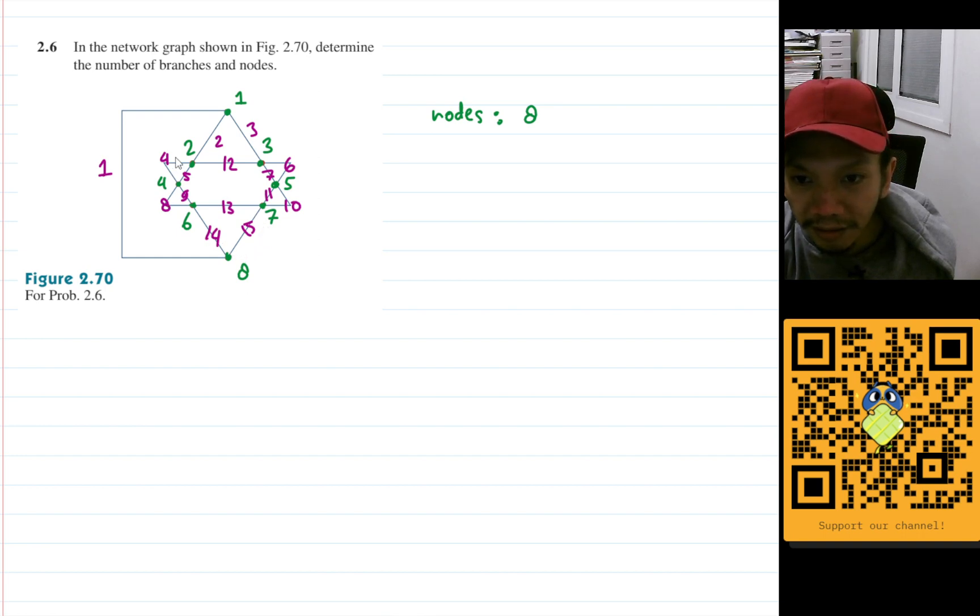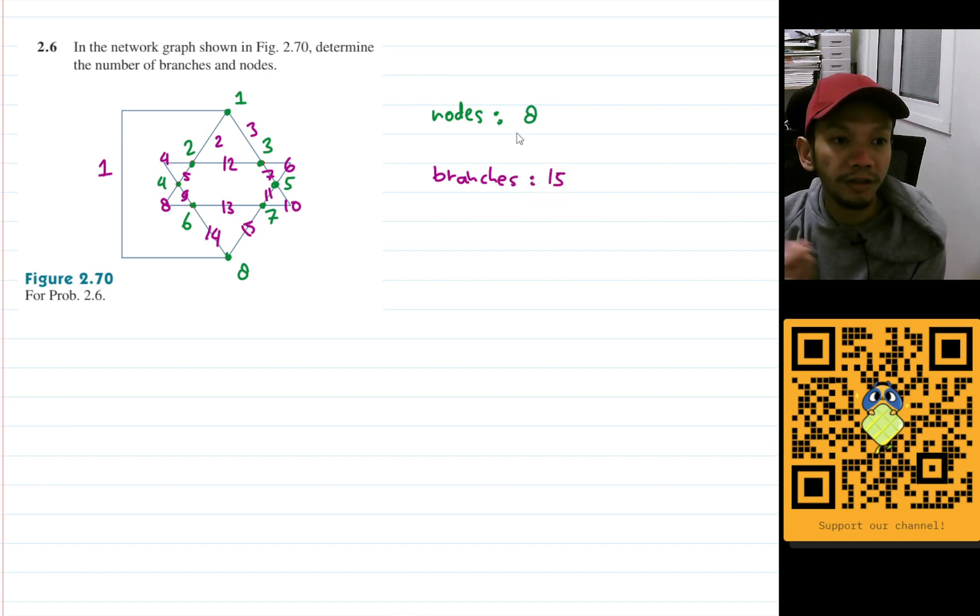Let's see. No, I did not miss something, I think. So for branches we will have fifteen branches. So in conclusion, we have eight nodes and fifteen branches. Hopefully I did not make any mistakes, but let me know if you find my mistakes in the comments, and see you in the next video. Bye bye.